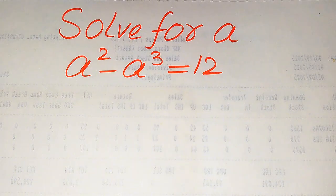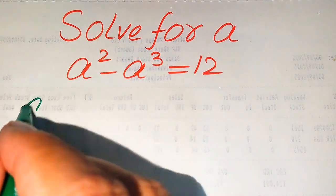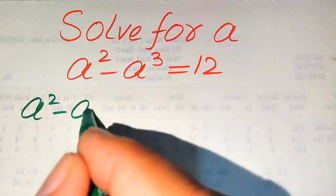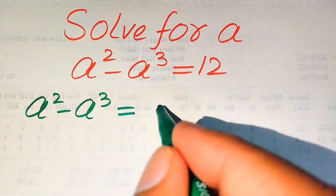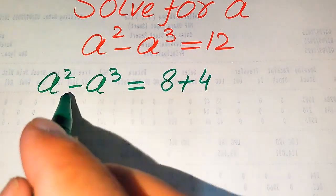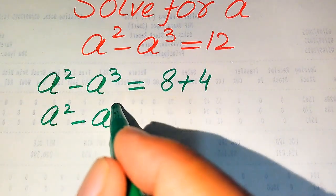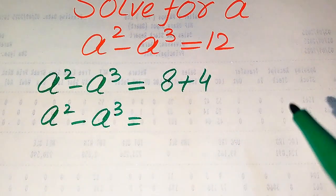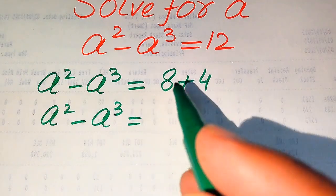In order to find the three roots, we focus on the right-hand side. We break 12 in the form: a squared minus a cubed equals 12, and we write 12 as 8 plus 4. On the left-hand side, one term is in square form and one is in cubic form, so we convert the right-hand side into the form of squares and cubes.